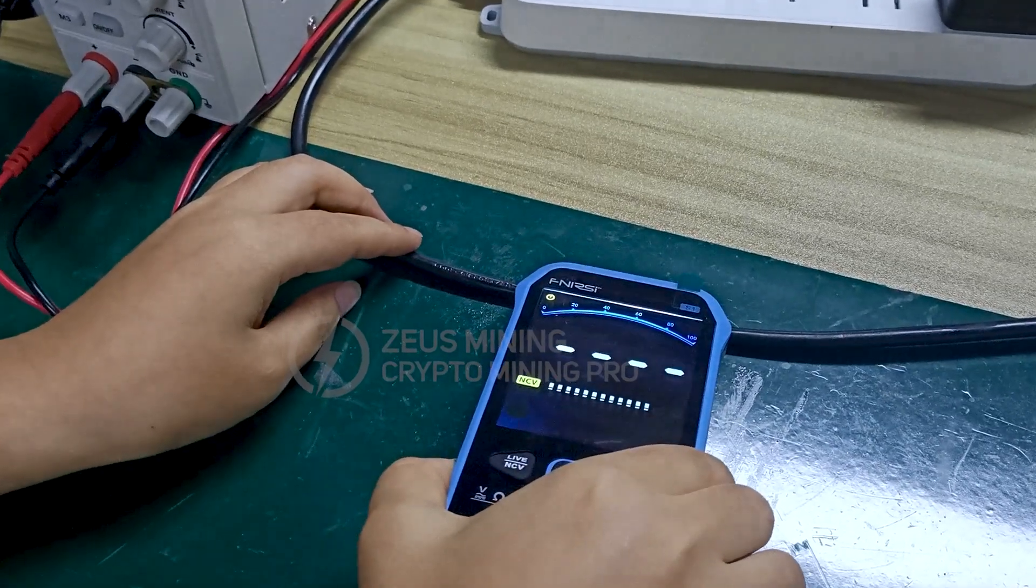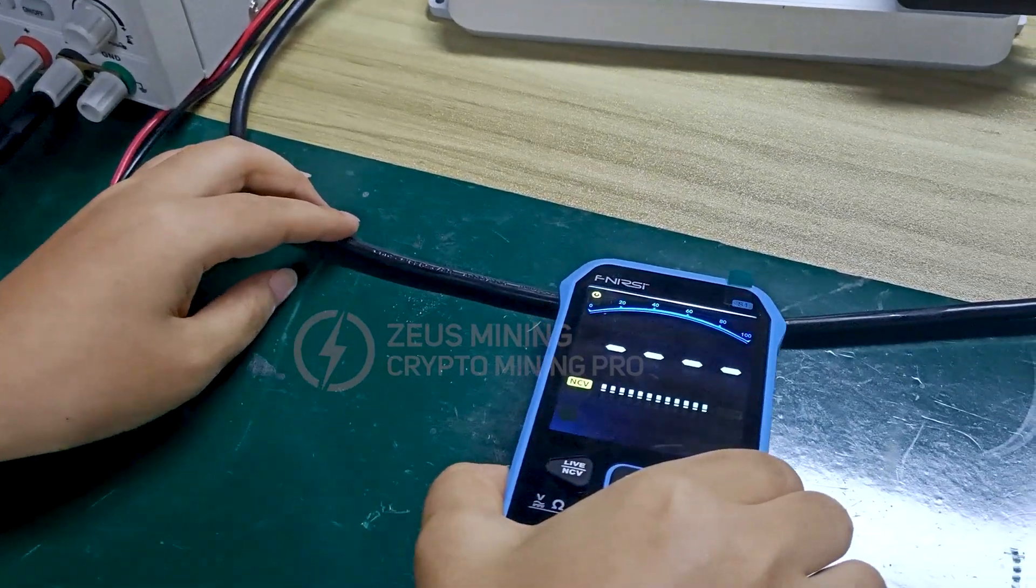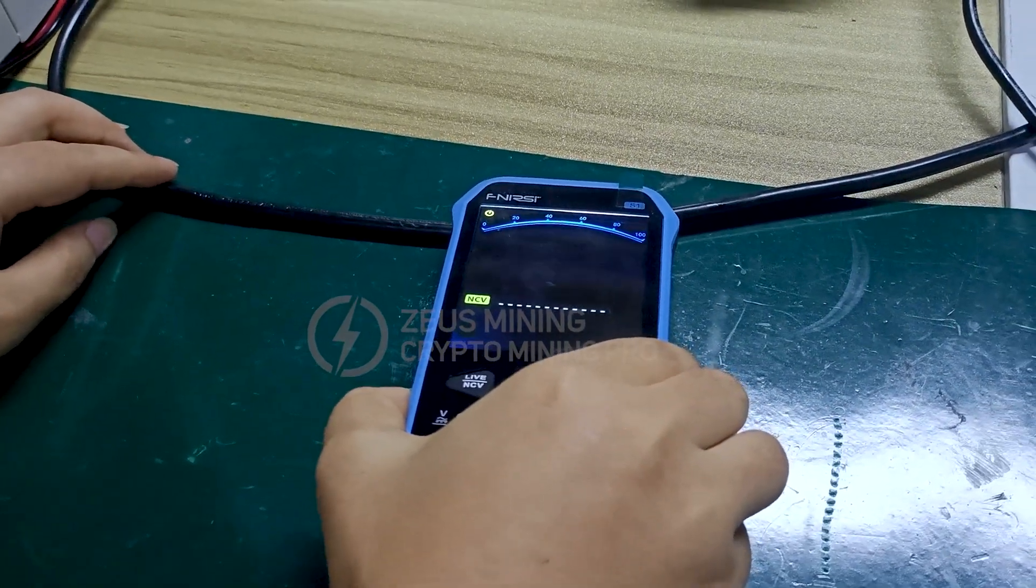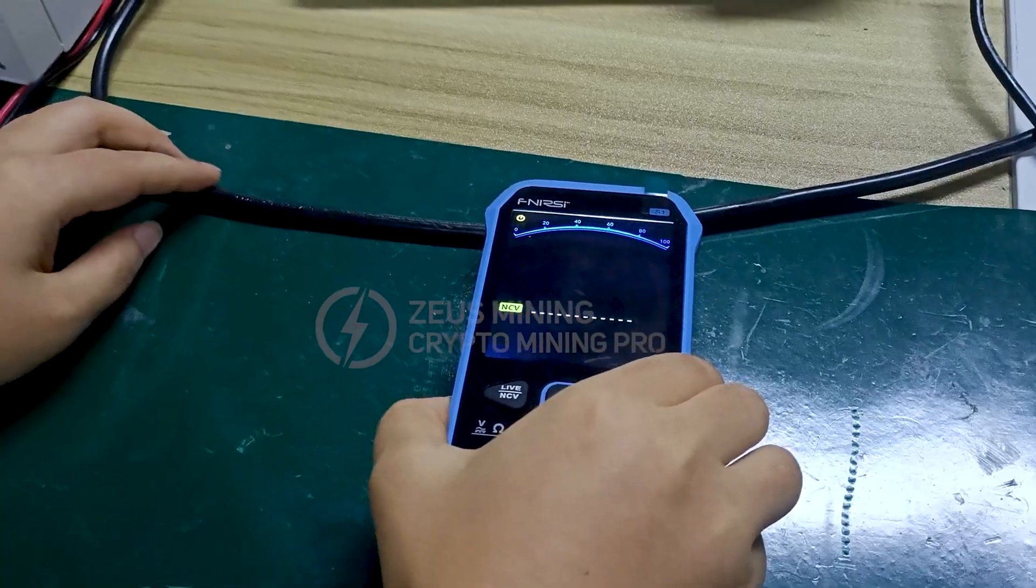We can hear a continuous beeping sound indicating that the power cord is good. On the contrary, if there's no beeping sound, then the power cord may be broken.